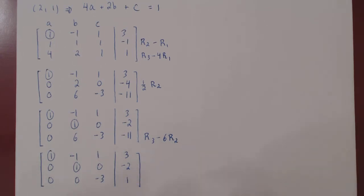We can obtain our third leading one by multiplying row three by negative one-third.